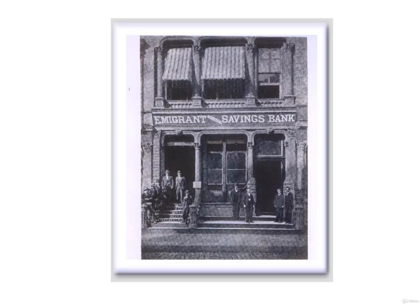Surviving state banks responded by offering customers checking accounts as a substitute for bank notes. As a result, by 1890, only 10% of the nation's money supply was in the form of circulating coinage or paper currency. Combined with lower hard money capital and reserve requirements, as well as the ease with which states issued banking charters, state banks again became the dominant banking structure in the late 1880s.